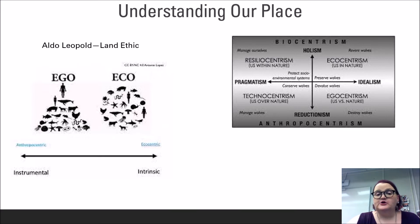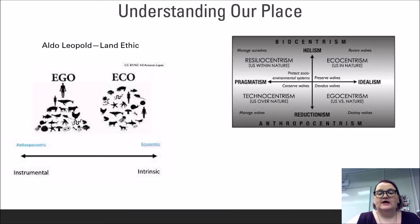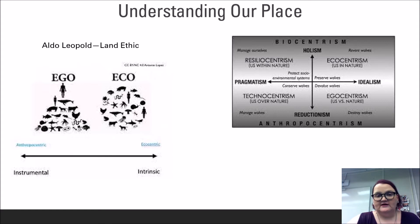One of the first major biocentric worldviews is the idea of land ethic, first put forth by Aldo Leopold in the 1940s. This worldview argues that human beings are just a part of the larger ecosystem. Leopold put it simply that land ethic should be the golden rule of engaging with the world around us: do nothing to the environment that you wouldn't do to yourself.